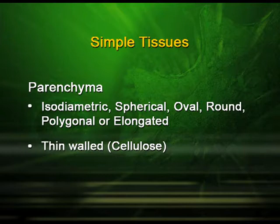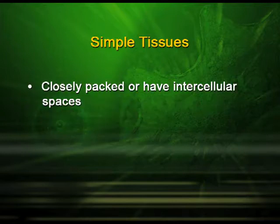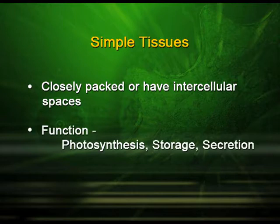Parenchymatous cells may also be elongated. Their walls are thin and made up of cellulose. They are closely packed but also have intercellular spaces. Their functions are photosynthesis, storage, and secretion.